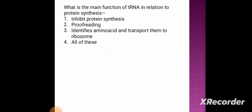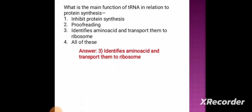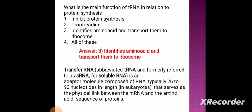Next question: what is the main function of tRNA in relation to protein synthesis? Option 1: inhibit protein synthesis, option 2: proofreading, option 3: identifies amino acids and transports them to the ribosome, option 4: all of the above. The correct answer is option 3 — identifies amino acids and transports them to the ribosome. tRNA, formerly referred to as sRNA (soluble RNA), is an adapter molecule composed of RNA typically 76 to 90 nucleotides in length in eukaryotes. It serves as a physical link between the mRNA and the amino acid sequence of the protein.